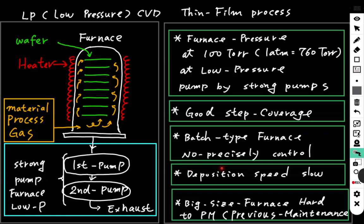The deposition speed is also slower. And the big size furnace is hard to do PM — preventive maintenance — because the chamber is so big.